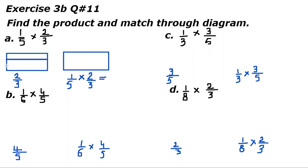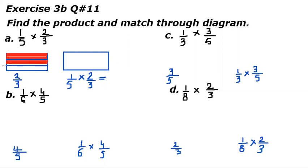Remember, you have to cut it into three parts but in a horizontal pattern. Then you will color only two parts. Two-thirds means out of three, only two parts are colored.